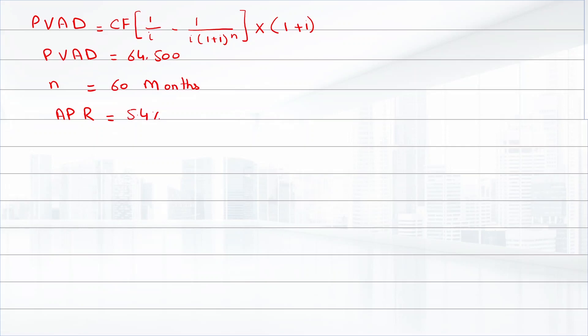Since n is in monthly form and the interest rate is in annual form, we need to convert APR into monthly form. We can do so by dividing APR by 12, giving us 0.0045.